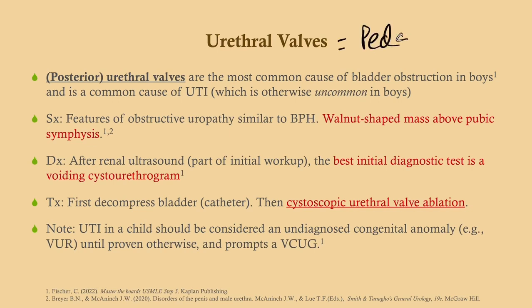Urethral valves are the number one cause of bladder obstruction in boys and perhaps the most common cause of bladder obstruction in children overall. It is also a common cause of UTI in children, which is otherwise uncommon — especially in boys. Symptoms mirror BPH since the mechanism is similar. Look for a walnut-shaped suprapubic mass indicating a full bladder. The best initial diagnostic test is a voiding cystourethrogram (VCUG), which visualizes the urethral valve. Treatment is bladder decompression with a catheter followed by pediatric urology referral for valve ablation.